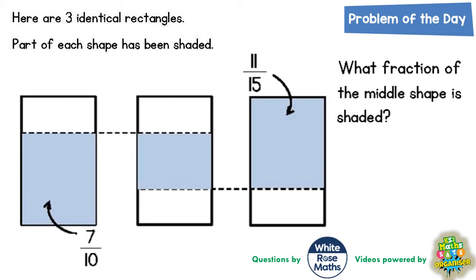Welcome problem solving fans to another problem of the day. This one's all about three identical rectangles — part of each shape is being shaded and we've got to figure out what fraction of the middle shape is shaded. We're told about the fraction that's being shaded on the two end rectangles.